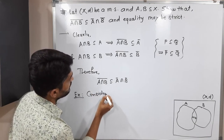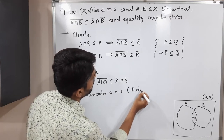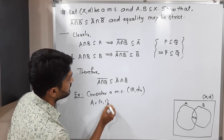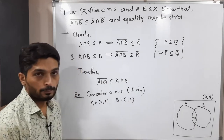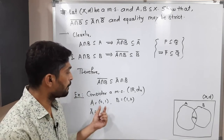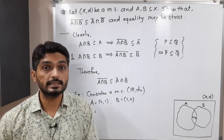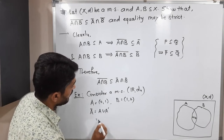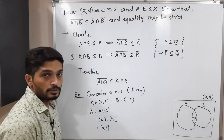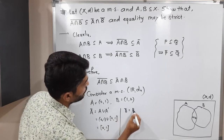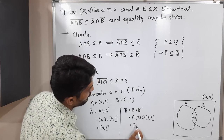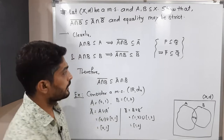Consider the metric space R with the usual metric, where d(x, y) = |x − y|. Let A = (0, 1) and B = (1, 2). Now, the closure of A equals A union A', where A' is the set of all limit points. A = (0,1) and its set of limit points is [0,1], so the closure of A is [0,1]. Similarly, the closure of B equals B union B', and since B = (1,2) and its limit points form [1,2], the closure of B is [1,2].